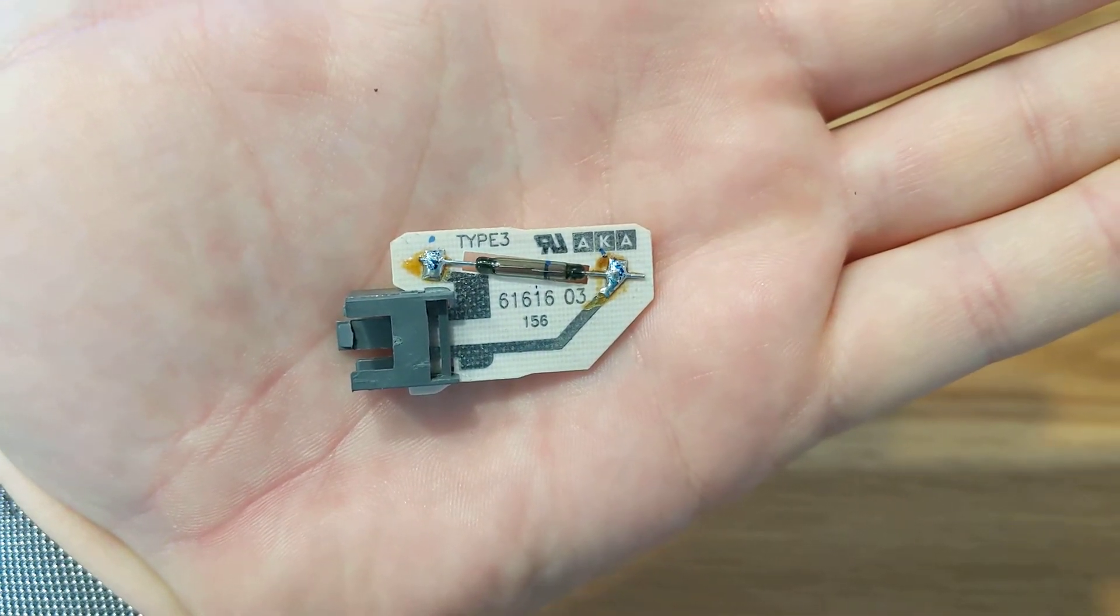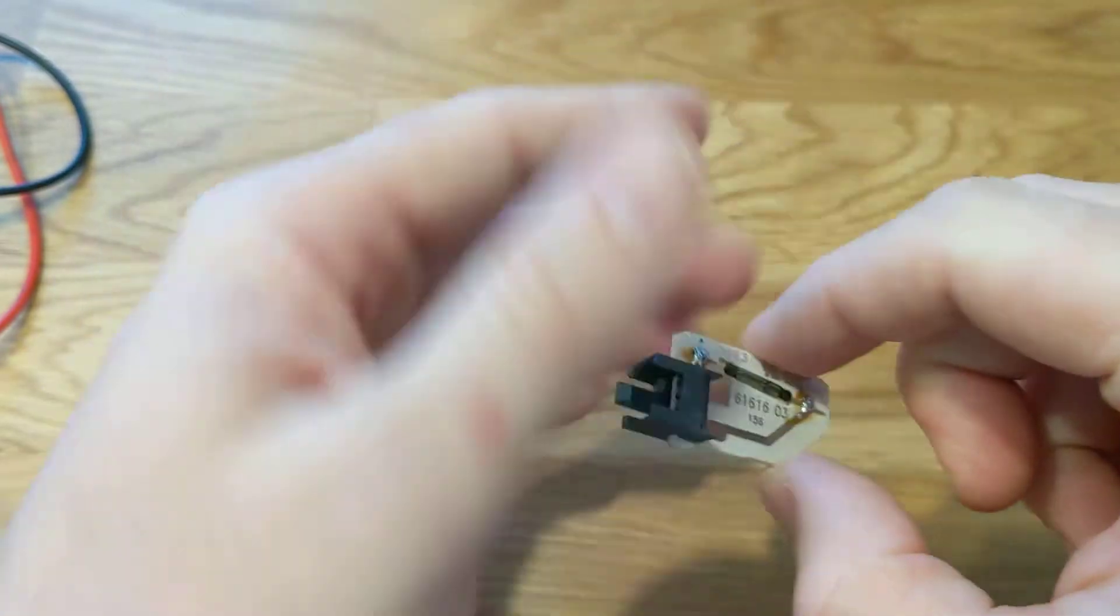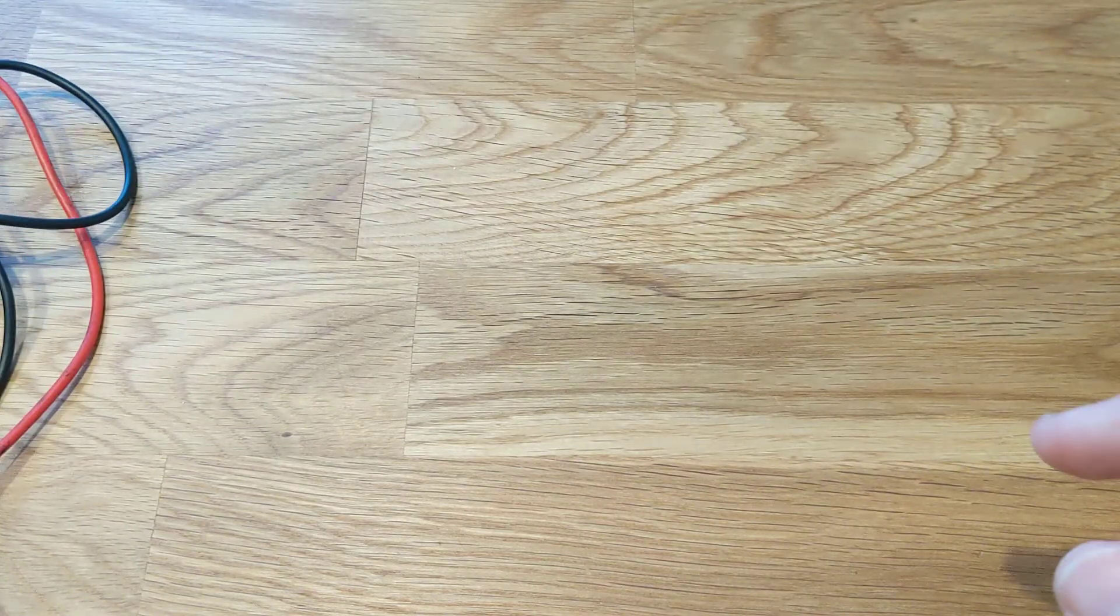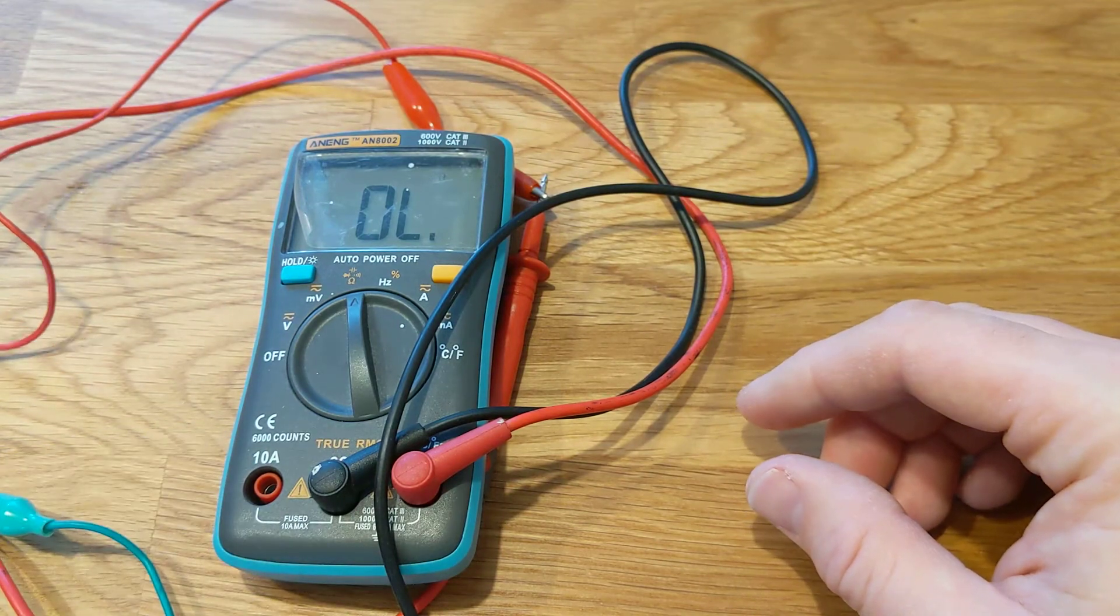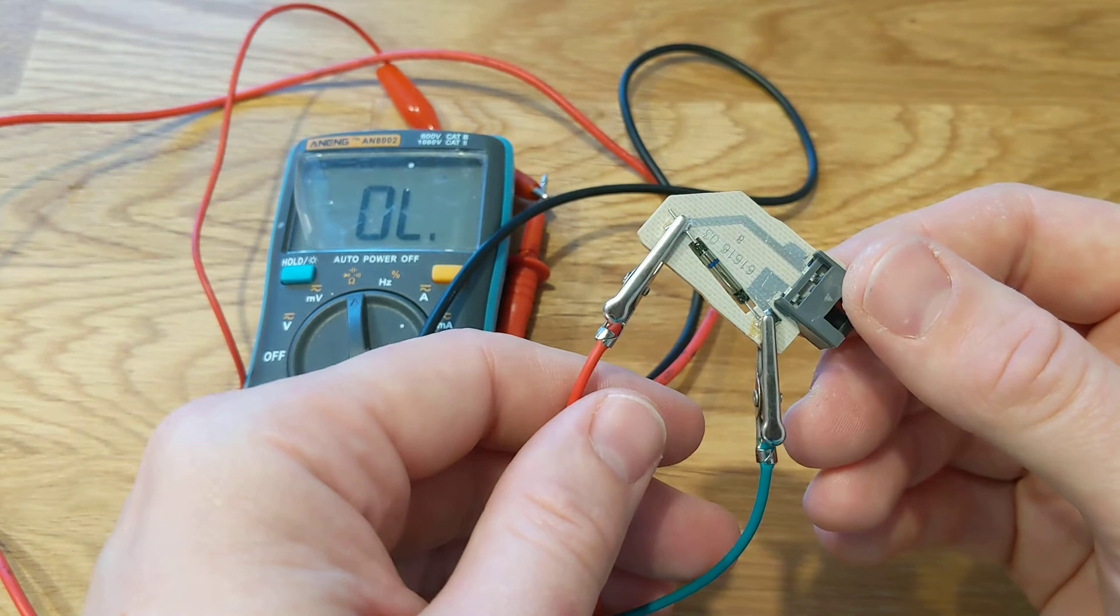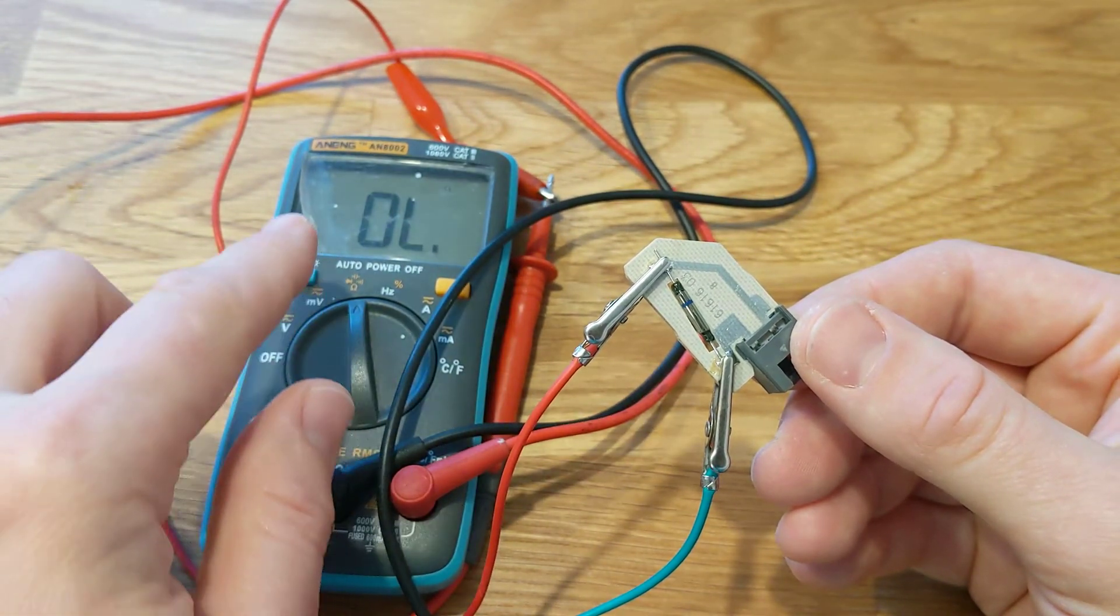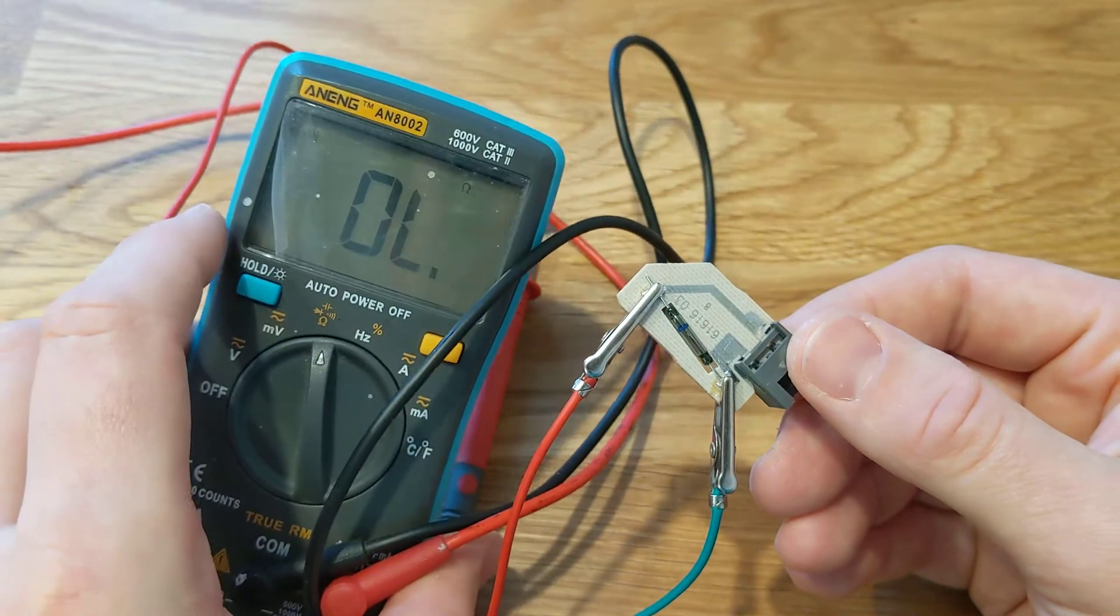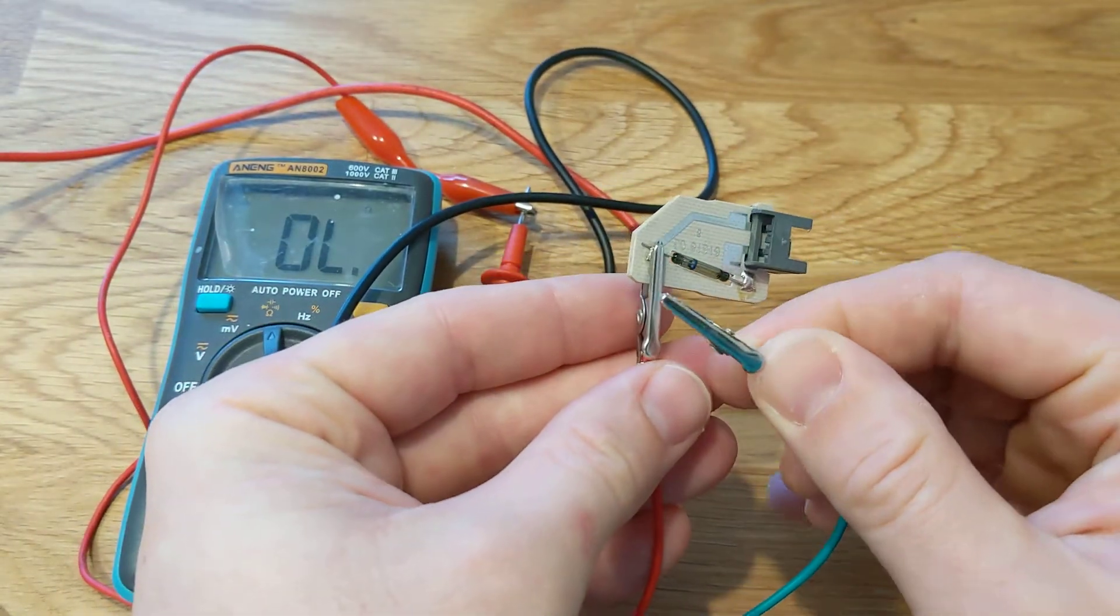How to test a reed sensor from a dishwasher. What you'll need is a standard multimeter, ideally with crocodile clamps, ideally set up on resistance mode with sound so when you short circuit it, it sounds.